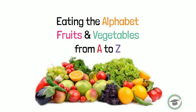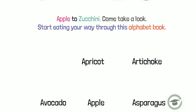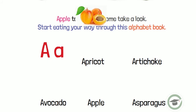Eating the alphabet. Fruits and vegetables from A to Z. Apple to zucchini, come take a look. Start eating your way through this alphabet book.